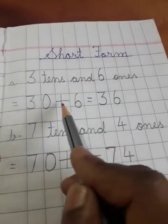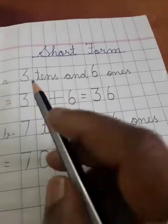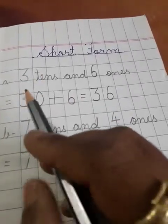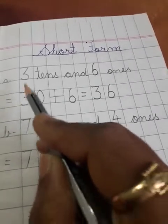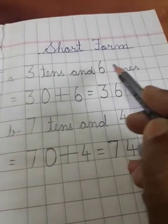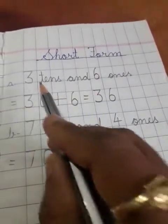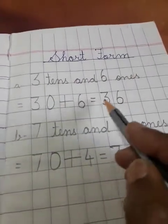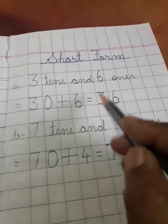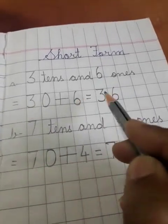30 plus 6. Here again this 3 is representing for tens, means 3 tens, means 30. And 6 is ones, so only 6. So 3 tens and 6 ones become 36. So the short form of 30 plus 6 is 36.